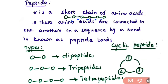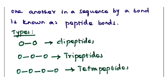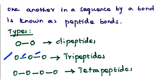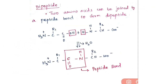Regarding types of peptides: if your peptide has two amino acids linked by a peptide bond, it is known as a dipeptide. If your peptide has three amino acids, it is known as a tripeptide. If it has four amino acids, it is linked as a tetrapeptide, and so on.